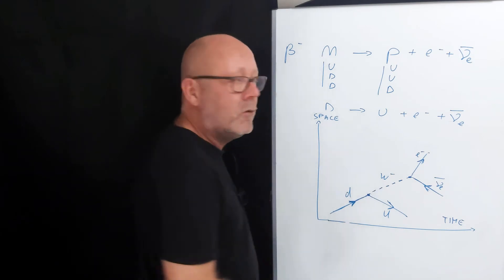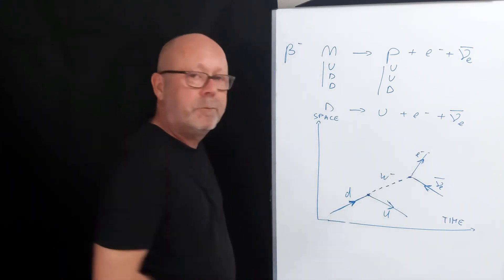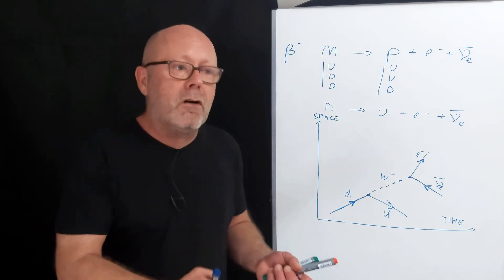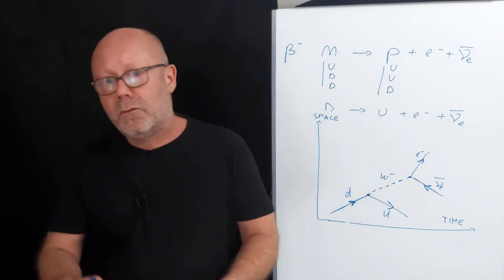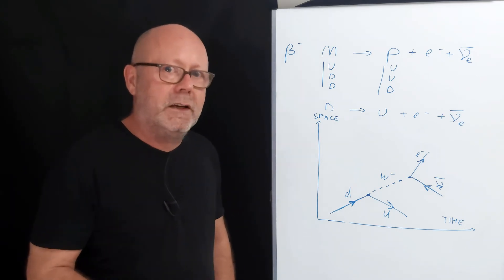The W- boson, the boson of the weak force, is represented by a dashed line. The photon for the electromagnetic force and the gluon for the strong force also have their own symbols. We'll talk about it a bit later in the video.